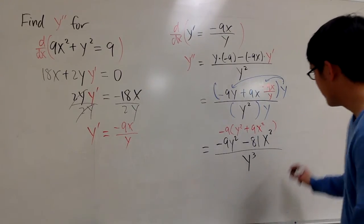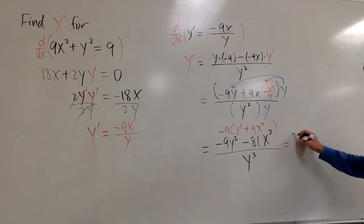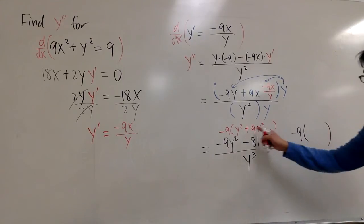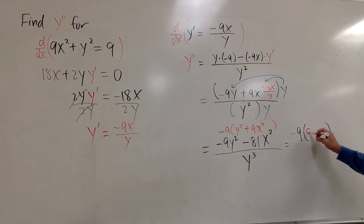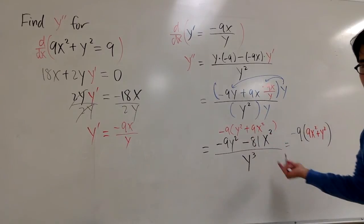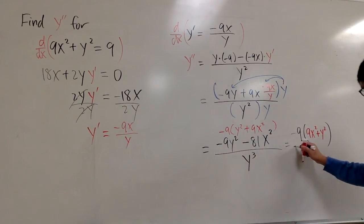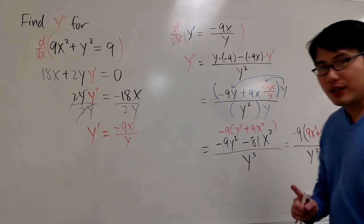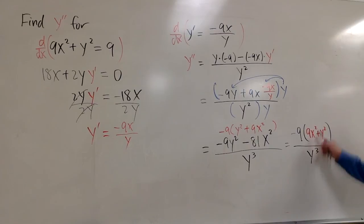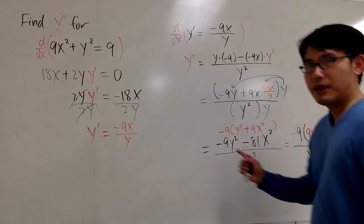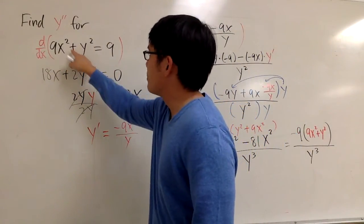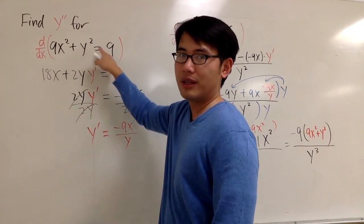And let's focus this part. This is negative 9 on the top. And the parentheses here, let me rewrite the order. Let me rewrite this as 9x² plus y². And of course, I can change the order of addition, which doesn't matter, right? Over y to the third power. And the reason that I do that is because this part now, 9x² plus y², if we refer back to the very beginning, 9x² plus y² is equal to the number 9.